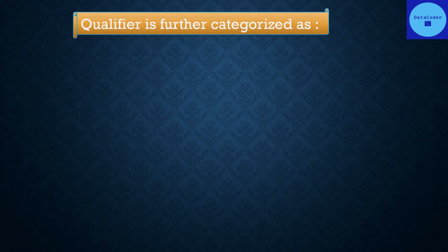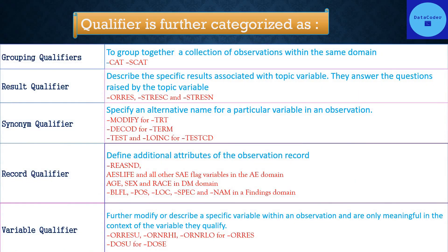Qualifier variables are subcategorized into: grouping qualifier, result qualifier, synonym qualifier, record qualifier, and variable qualifier. Grouping qualifiers group together a collection of observations within the same domain, like category and subcategory variables.